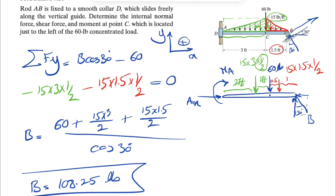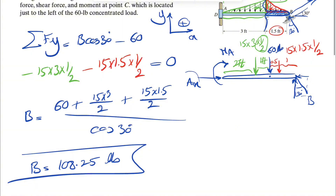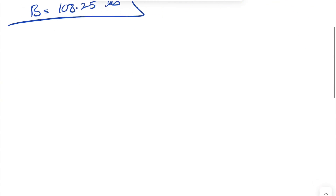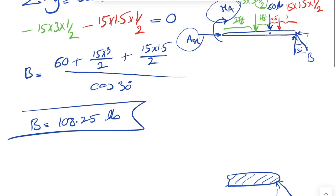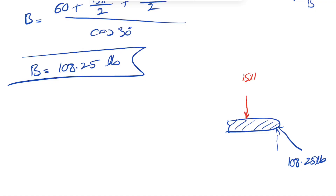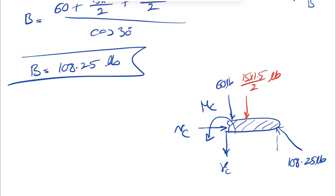Now that we've found B, we look at the free body diagram of the right section at point C. Going with the right side of the beam is faster. We have force B of 108.25 pounds, the red distributed force of 15×1.5÷2 pounds, and the 60-pound force exactly at point C. We need to find the normal force Nc, shear force Vc, and bending moment Mc — the three unknowns the question asks for.